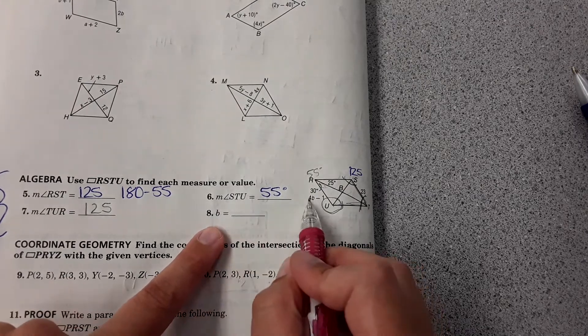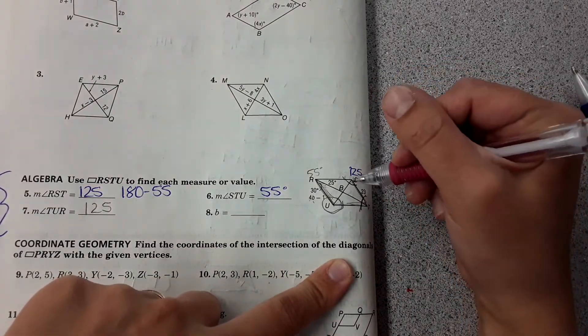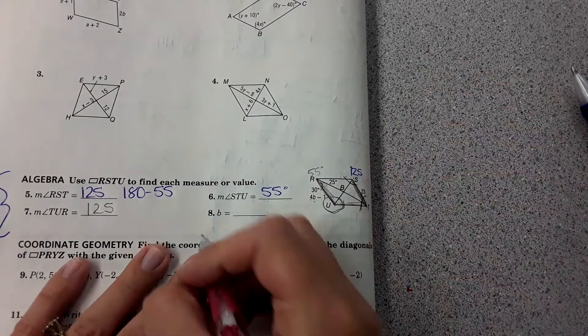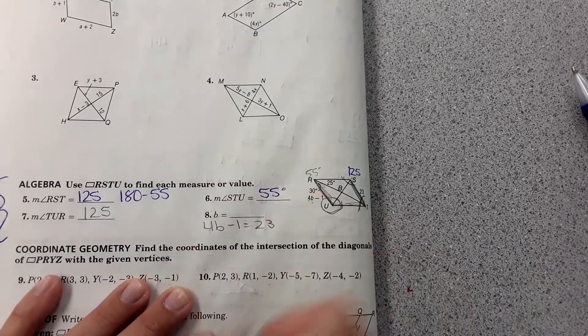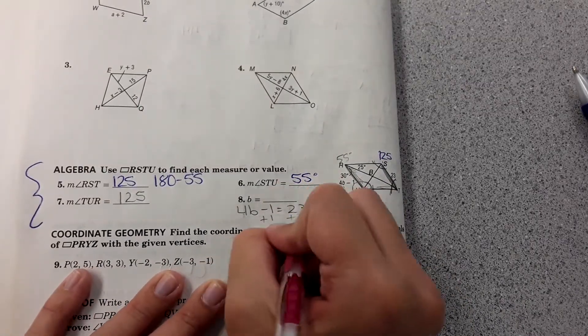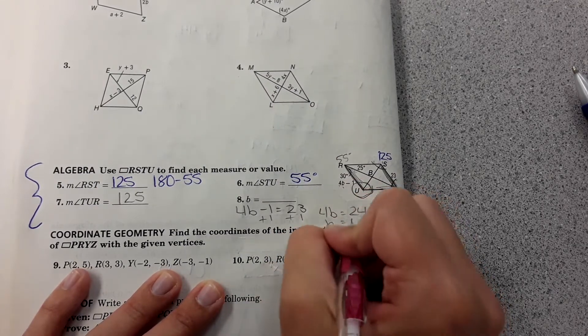TUR is this angle, which is opposite that one, so it has to be 125. Then last but not least, it asks for the variable b. That is referring to the length of that side, and we can set that equal to 23 to solve for b. So 4b minus 1 equals 23. B equals 6.